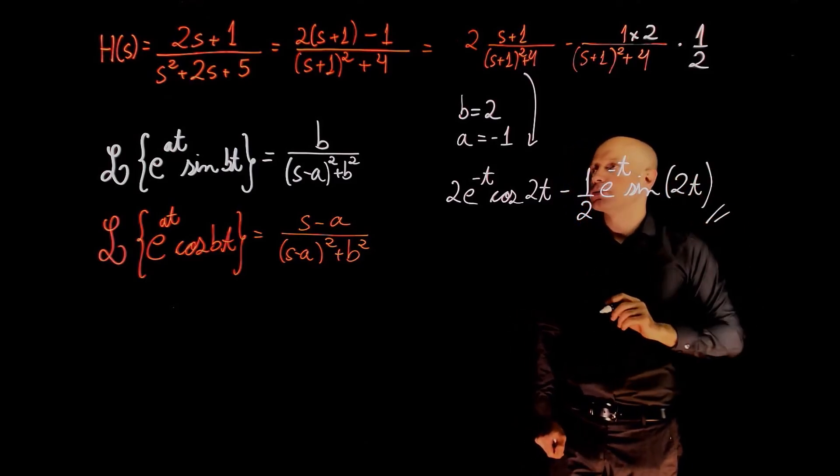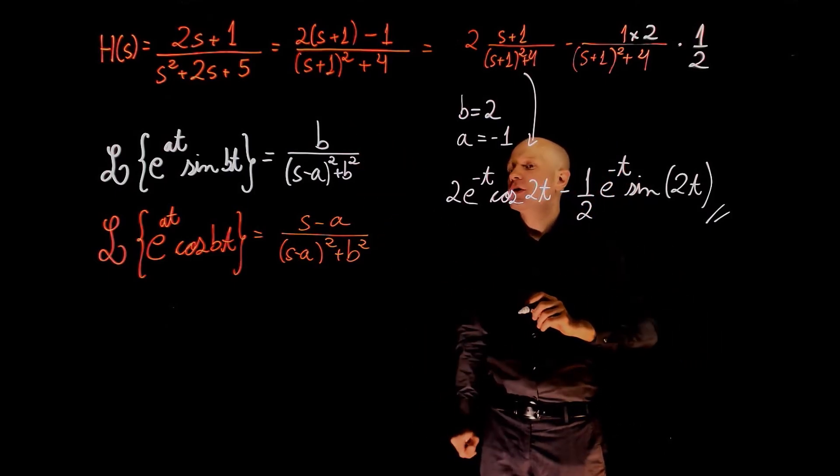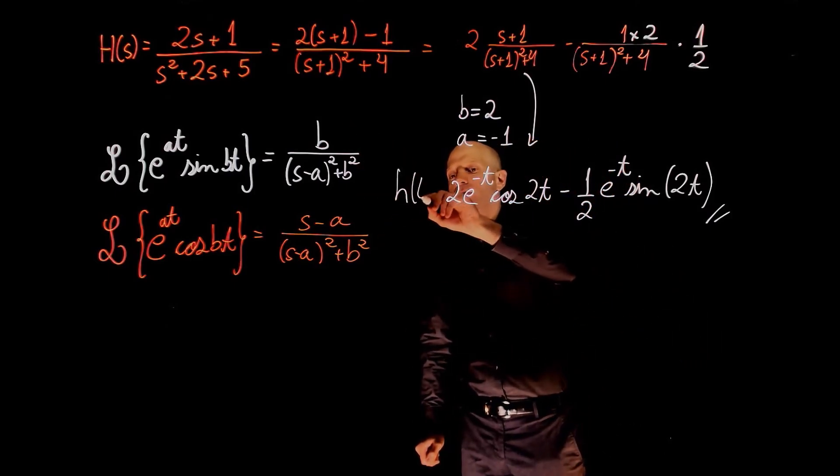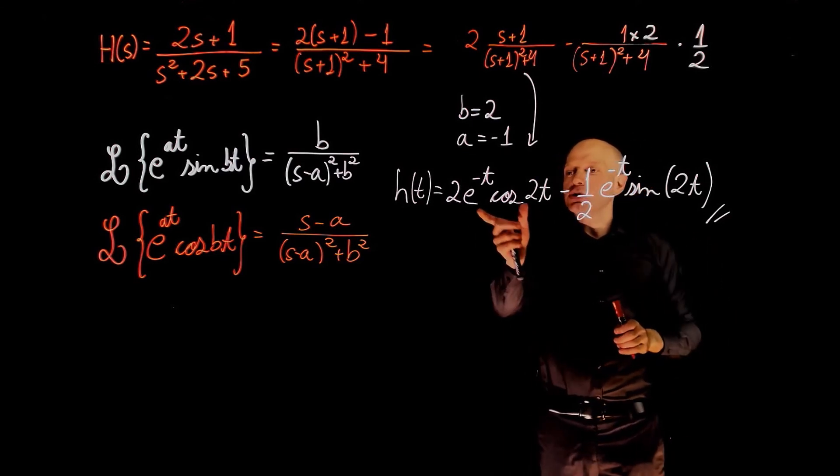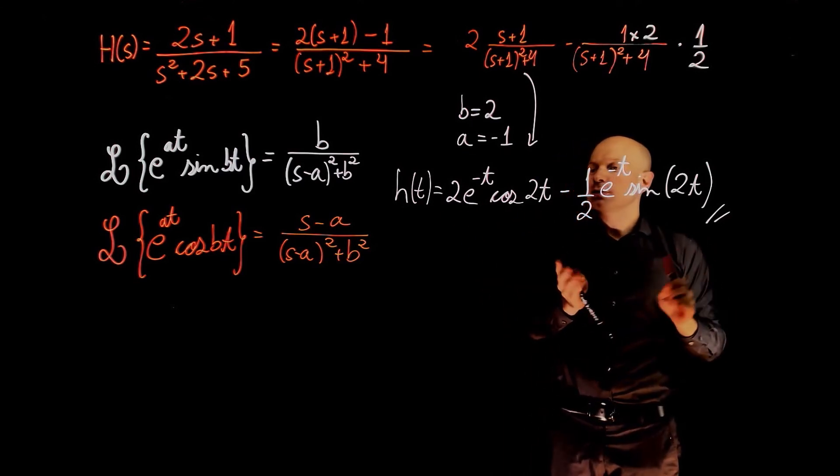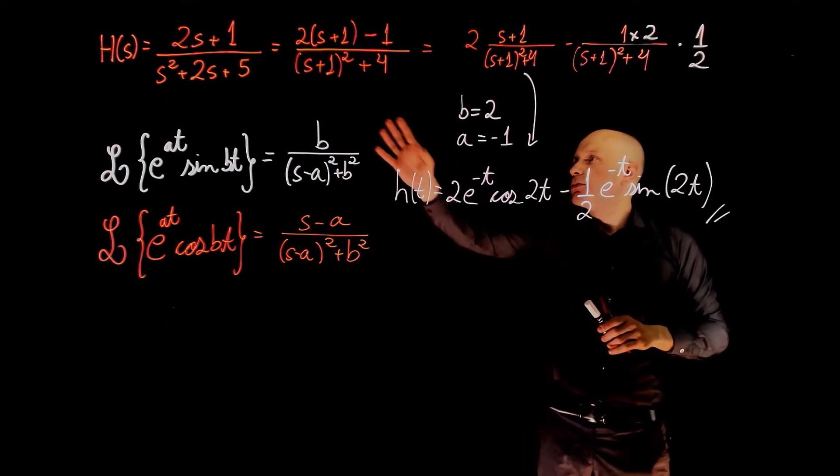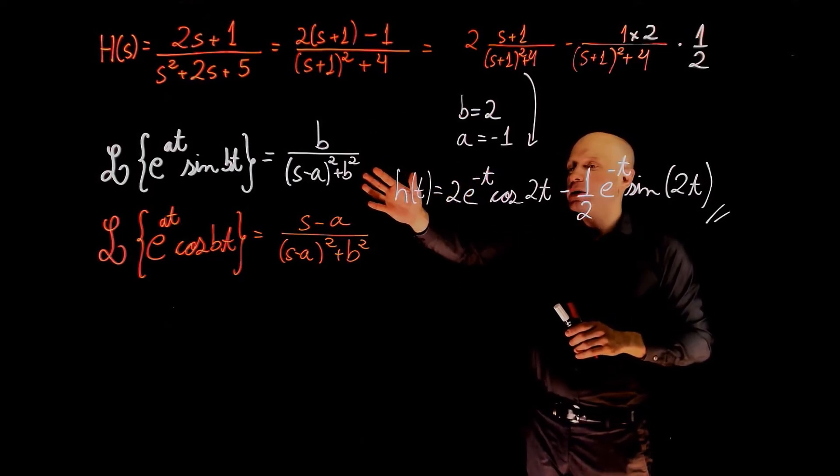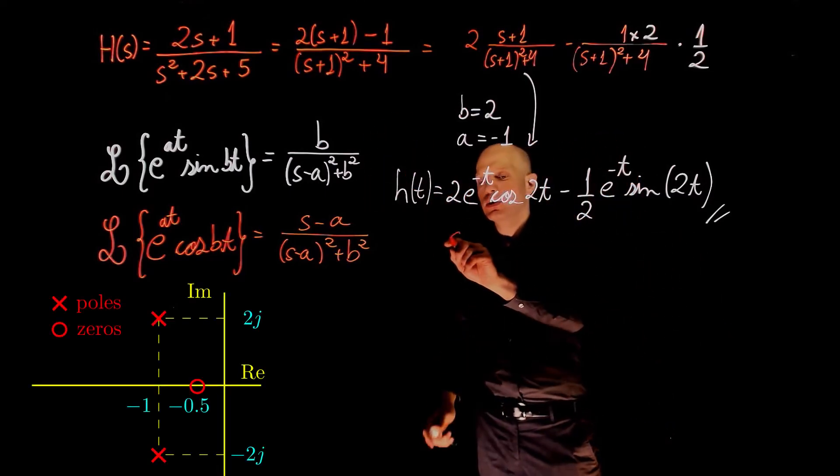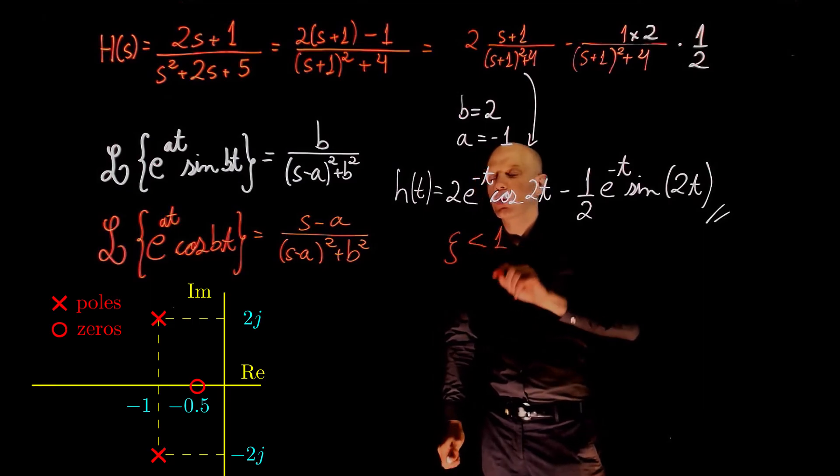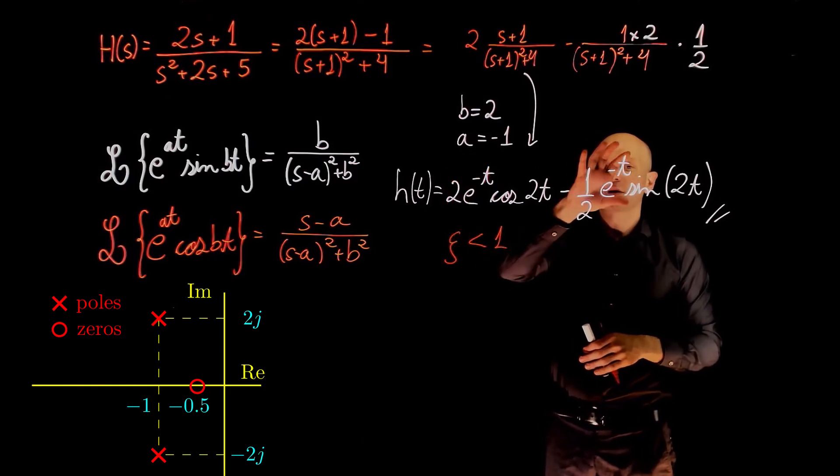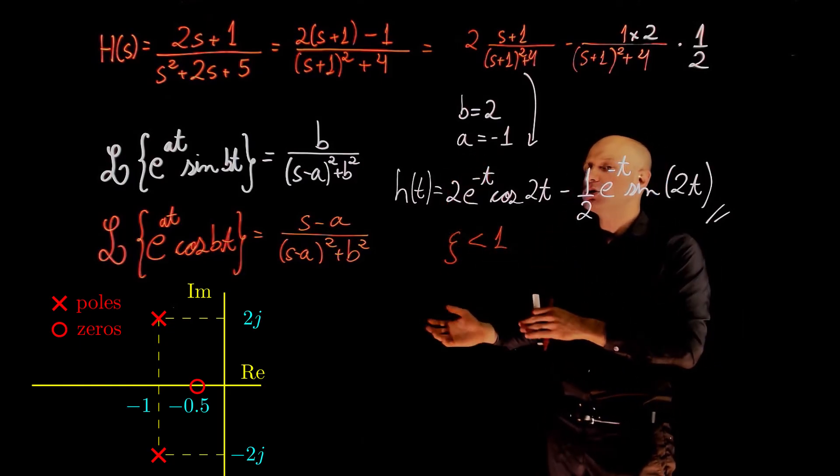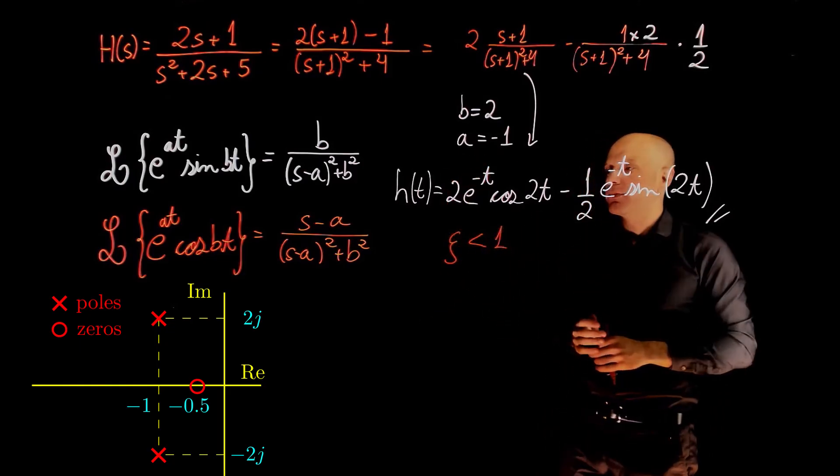And this is now the impulse response of h of s. So let's call this h of t. We see now that we have here exponential and sinusoidal components. And again, this is because our poles are complex conjugate numbers. The damping ratio is less than 1. Complex conjugate numbers, the real part gives the exponential components, the imaginary parts, the sinusoidal components.